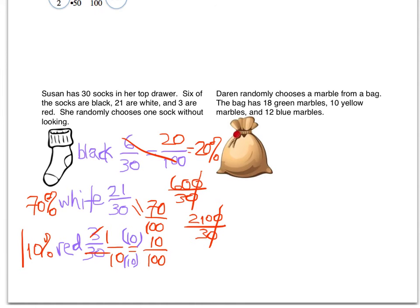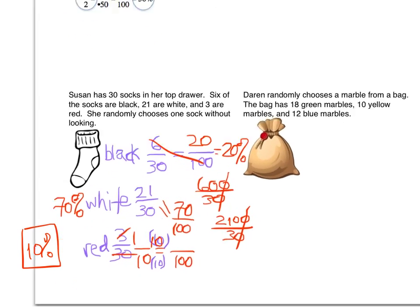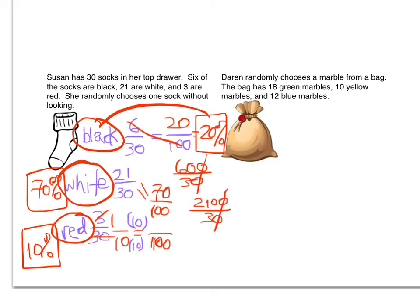So the red socks must be 10 percent. So we've got our percent of each of the socks. The black socks are 20 percent, the white socks are 70 percent and the red socks are 10 percent.